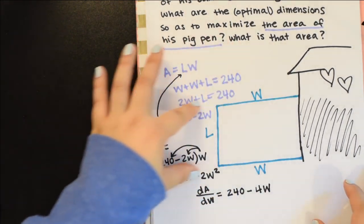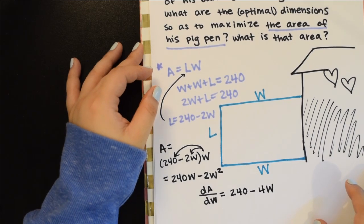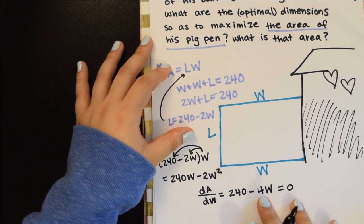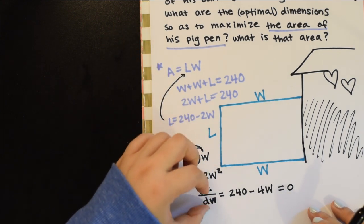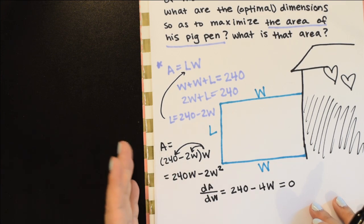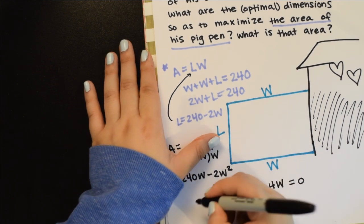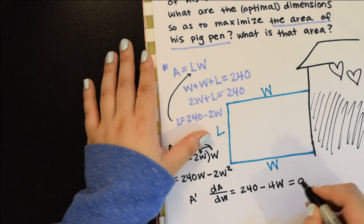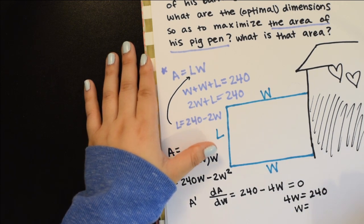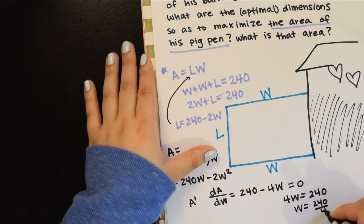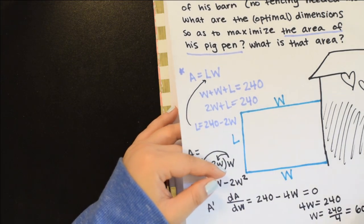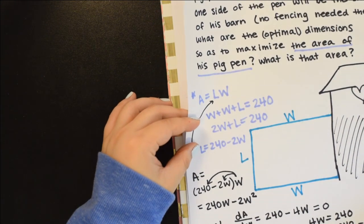We're going to set this equal to zero and solve for W, because that's where our possible widths would be so that our area is maximized or minimized. If I solve this, 4W equals 240, W equals 240 divided by 4, which is 60 feet. This is not undefined anywhere, so we're not worried about that.